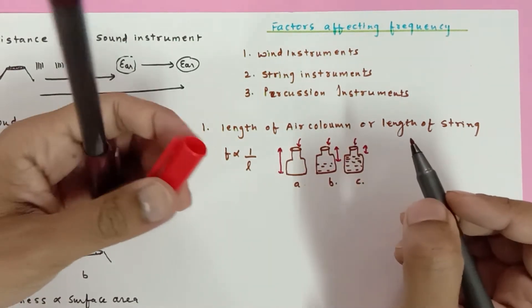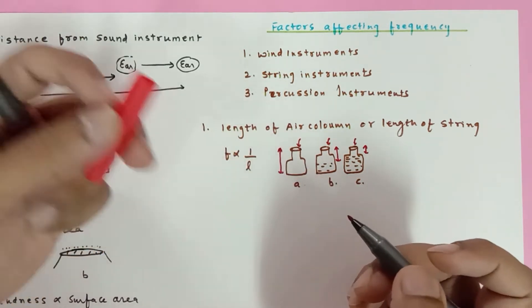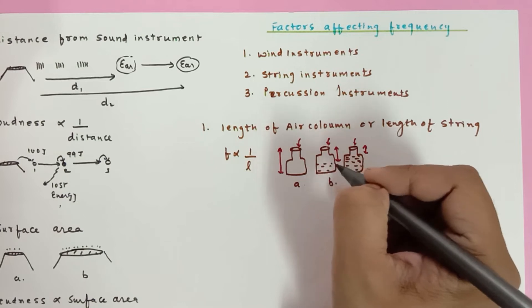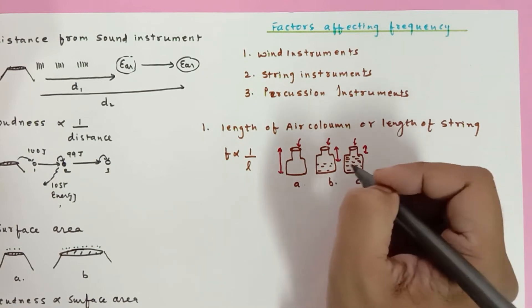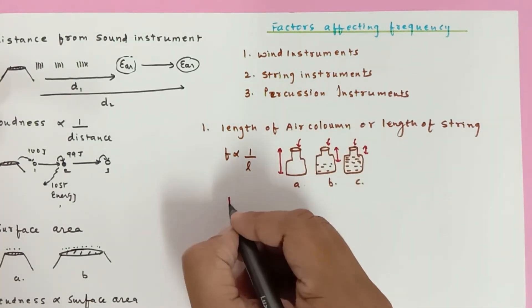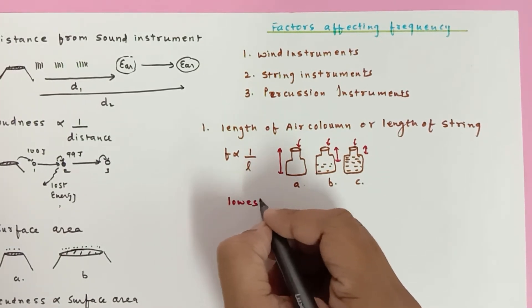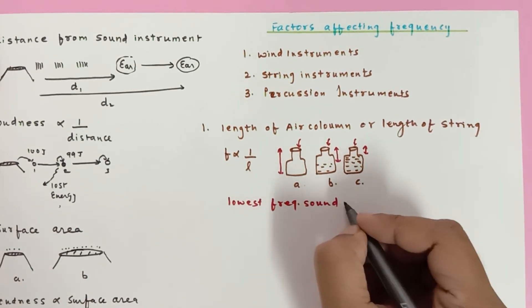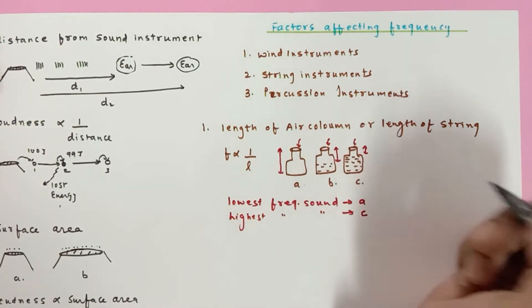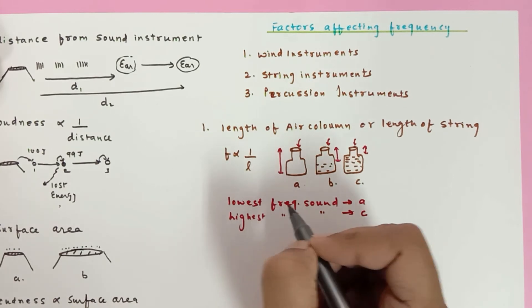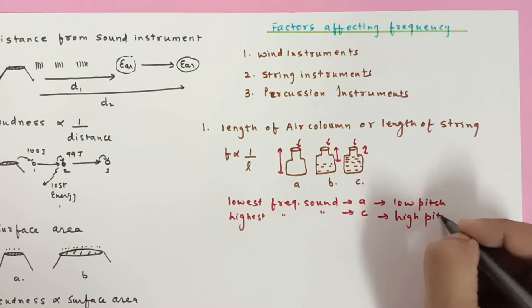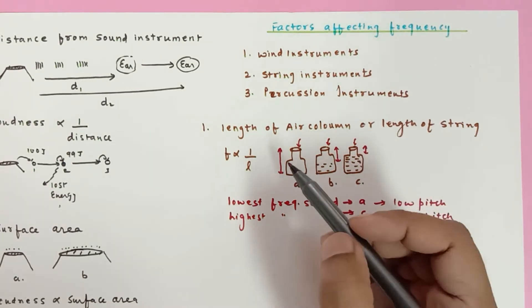When you blow air in from the top, the air particles vibrate. The water's role is just to rebound the sound. Since bottle A has the longest air column, it produces the lowest frequency sound, while bottle C has the shortest air column and produces the highest frequency sound. Low frequency is the same as low pitch, and high frequency is the same as high pitch.